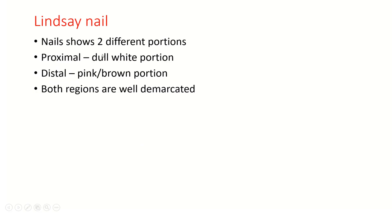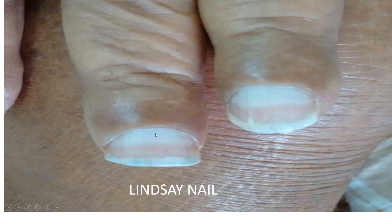Lindsay nail: the nail shows two different portions — a proximal dull white portion and a distal pink or brown portion. Both regions are well demarcated. You can see here the proximal dull white portion and distal pink portion are clearly demarcated.